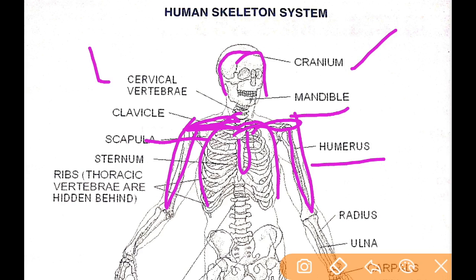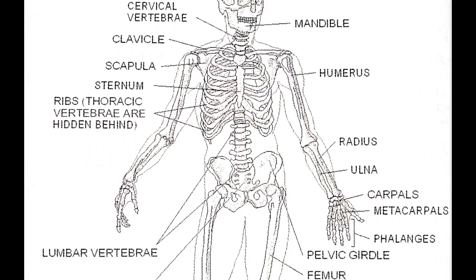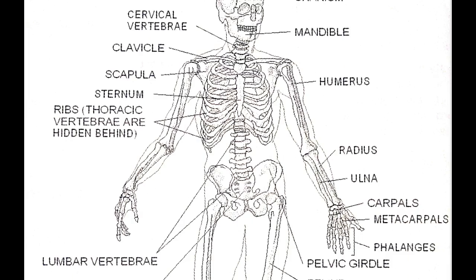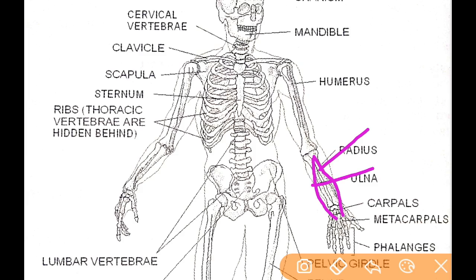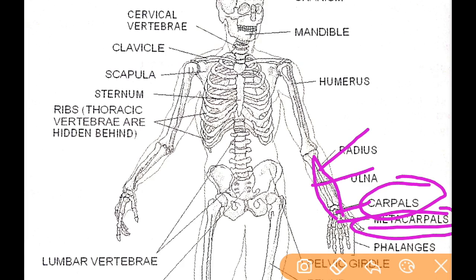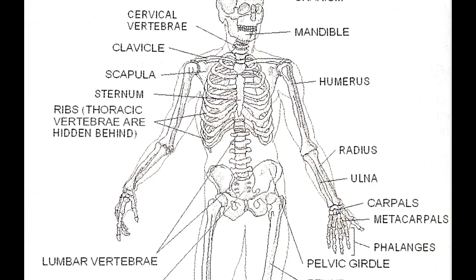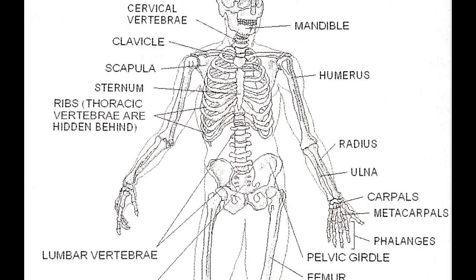The upper part of the forelimb is called the humerus. In the lower forearm there are two bones: one is the radius and the other is the ulna. The wrist bone is called carpals, the palm region bones are called metacarpals, and the finger bones are called phalanges.